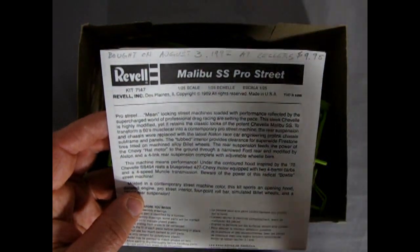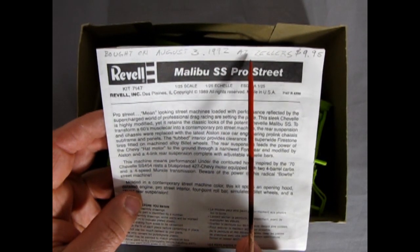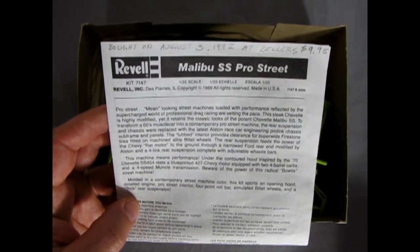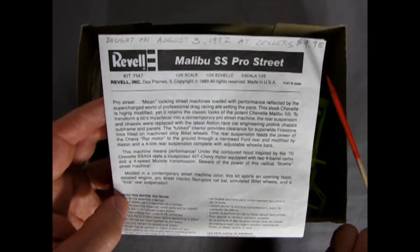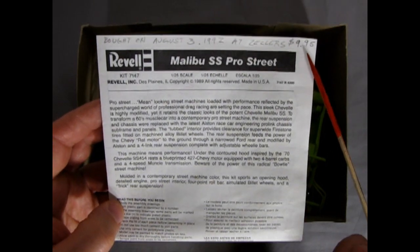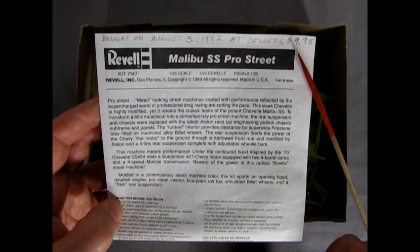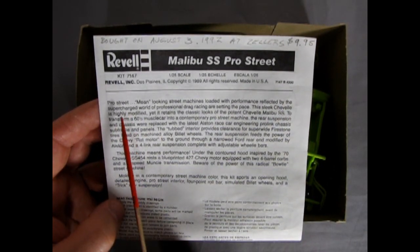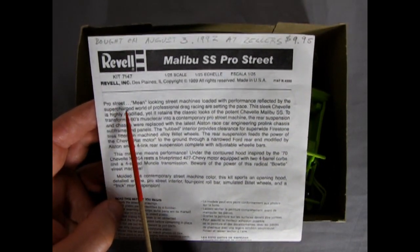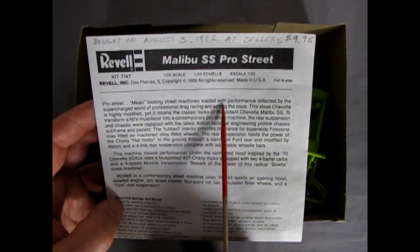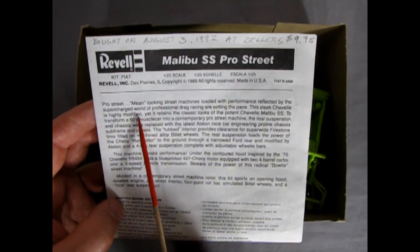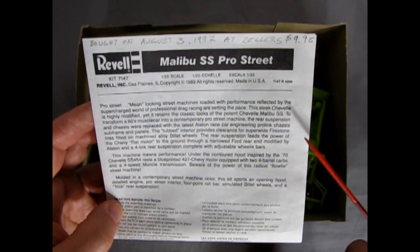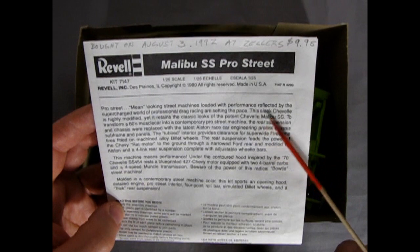And again I wrote on the top bought on August 3rd 1992 at Zellers Canadian store for $9.95. Too bad it's not that way now. The most recent model kit I've got unfortunately is like $47 for the same thing. That's Canadian so guys don't need to be scared there in the States. Pro Street.